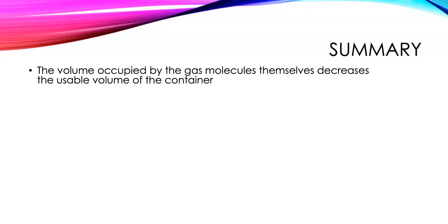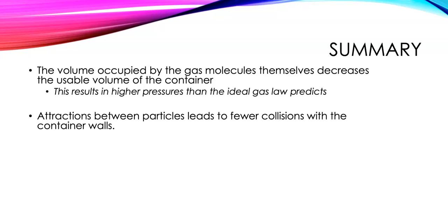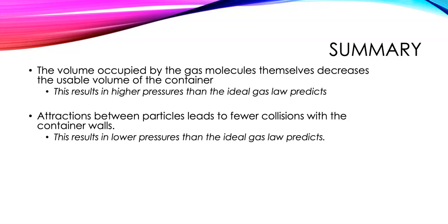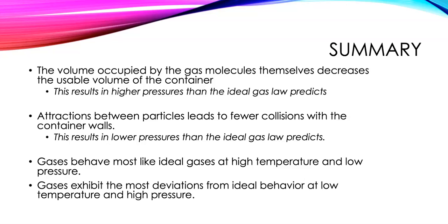To summarize: the volume occupied by gas molecules themselves — the excluded volume — decreases the usable volume of the container, resulting in higher pressures than the ideal gas law predicts. Attractions between particles lead to fewer collisions with the container walls, resulting in lower pressures than expected. Gases behave most like ideal gases when temperatures are high and pressures are low. The most significant deviations from ideal behavior occur when temperatures are low and pressures are high — it's very important to know those last two points.